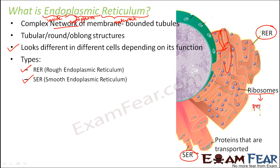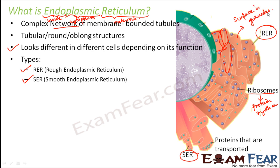Ribosomes are the site for protein synthesis, so proteins get synthesized on the ribosomes present on the rough endoplasmic reticulum. The smooth endoplasmic reticulum does not have ribosomes. The smaller green dots represent proteins, which are present in both types because proteins have been synthesized and need to be transported. Without ribosomes, the smooth ER has a continuous, smooth surface, whereas the rough ER surface is granular due to the presence of ribosome granules.